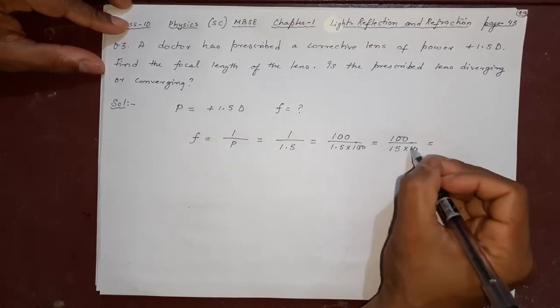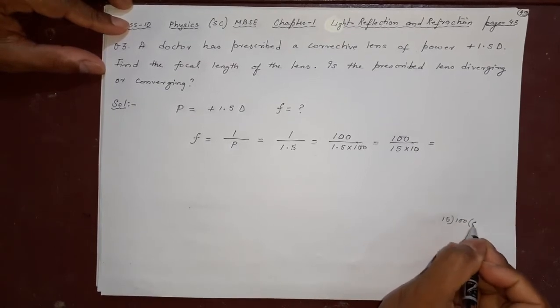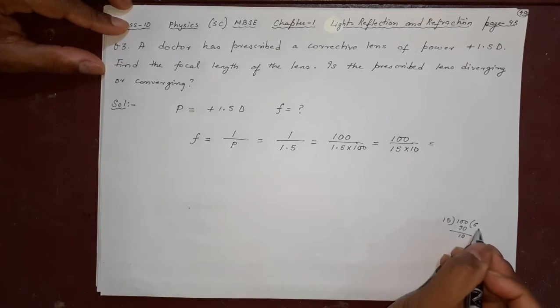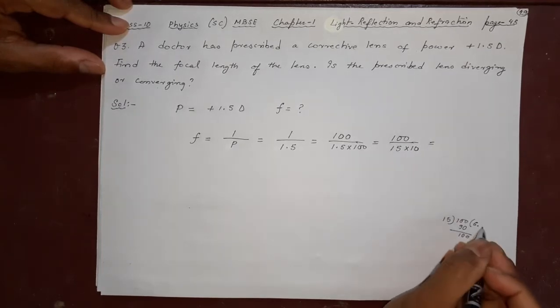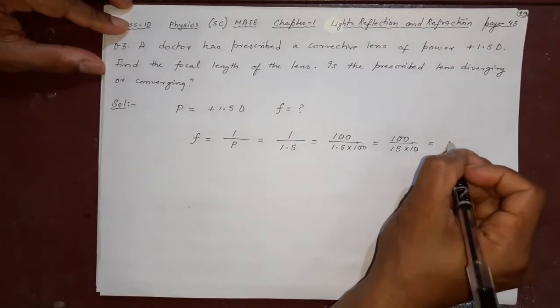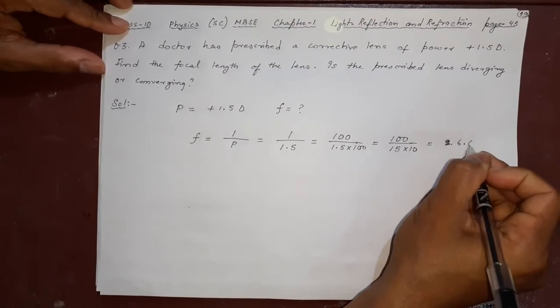15 and 100, what will happen? 15, 6 and 90. 10 remains, 0.15, 6 and 90. It will continue like this. 6 point 6, 6 divided by this 10. This 10 is here.